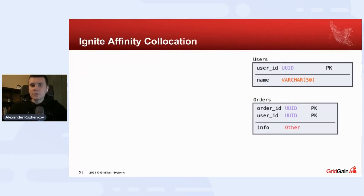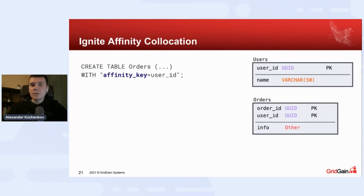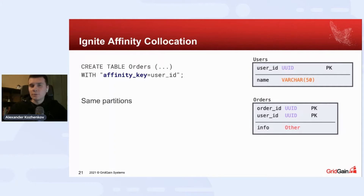Just a few words about affinity allocation. If we have two tables — users and orders — we may want to store all information about the same user on one node: all primary partitions for a specific user on one node and backups on others. This helps avoid data transferring when we do selects with joins, because distributed join is an expensive operation. Apache Ignite allows this with affinity allocation, where we say that the affinity key for the orders table is user ID, which must be part of the primary key. After that, all entries with the same user ID will be stored in partitions with exactly the same numbers and therefore on the same nodes. Partitions count for both caches must be equal.